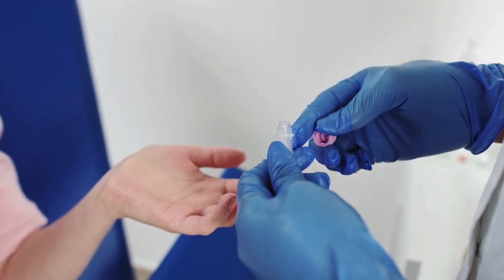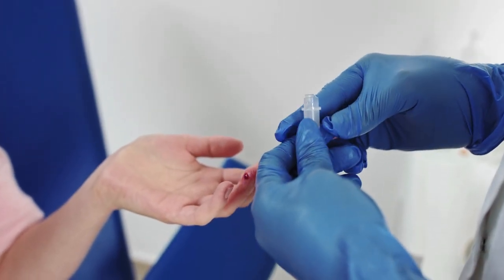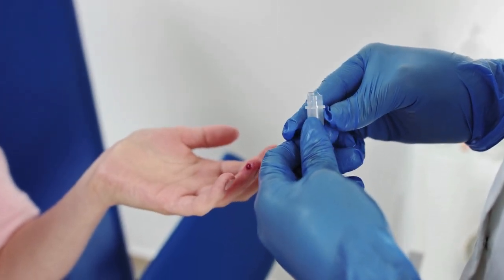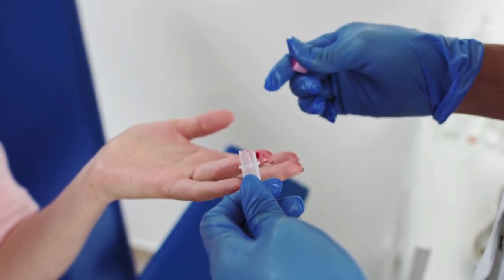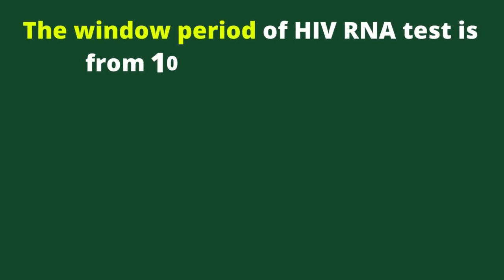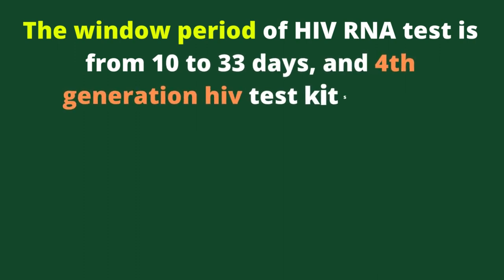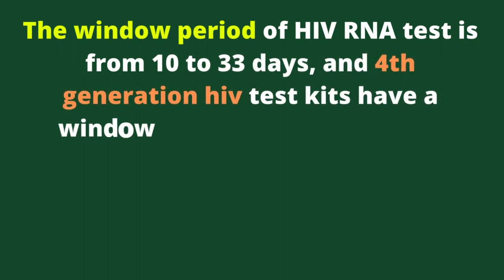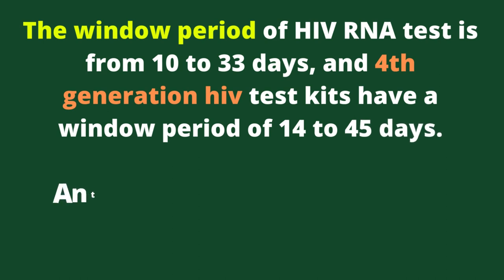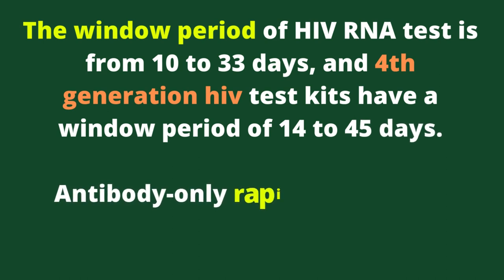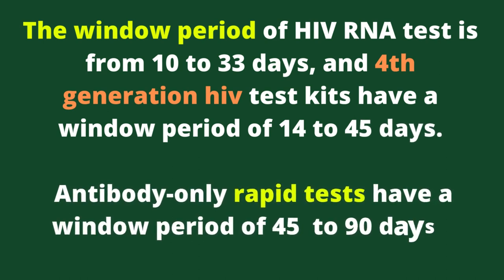As your bonus, if you are thinking about testing for HIV, then this is for you. The window period of the HIV RNA test is from 10 to 33 days, and 4th generation HIV test kits have a window period of 14 to 45 days. Antibody-only rapid tests have a window period of 45 days.